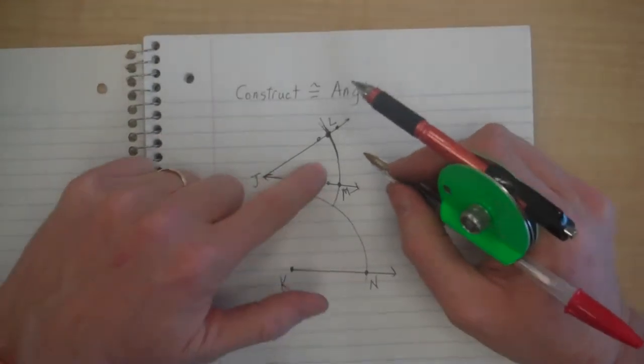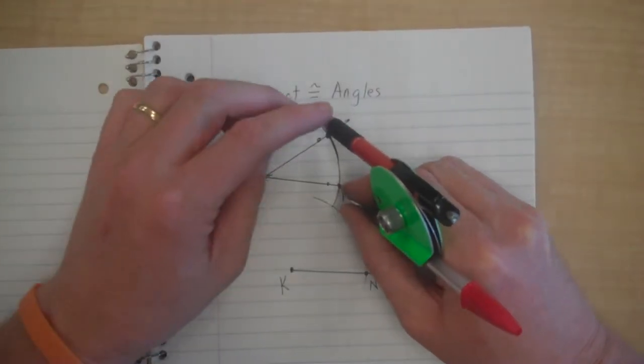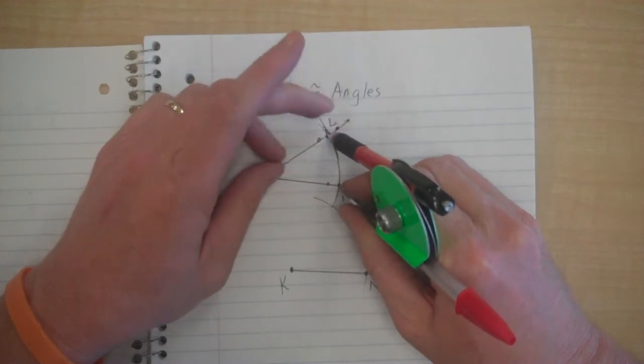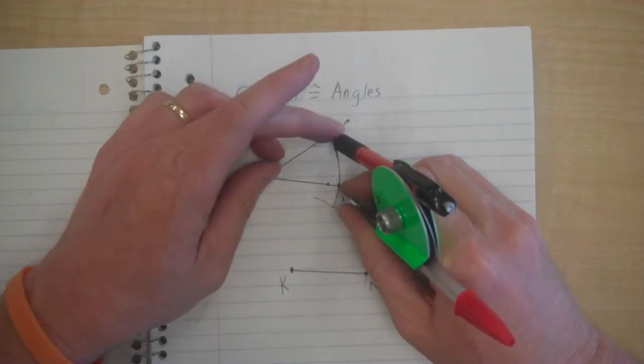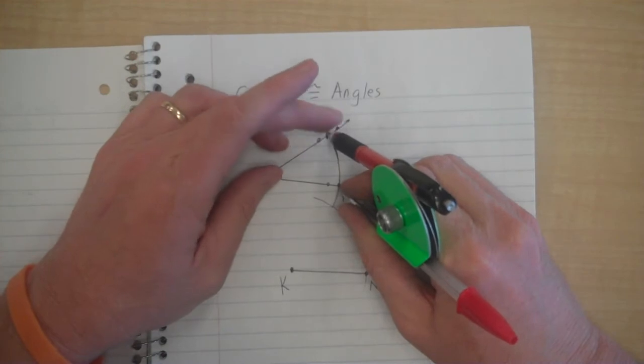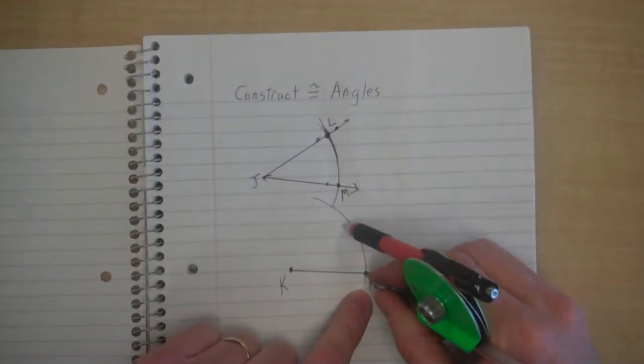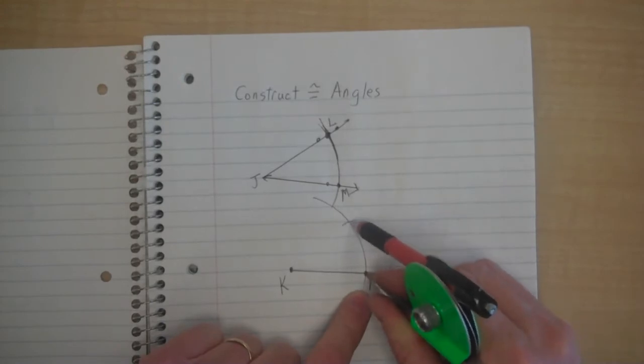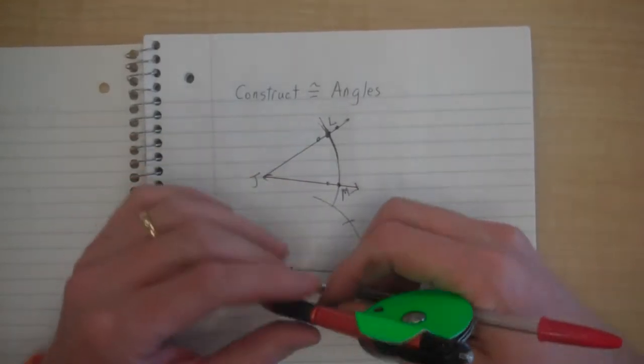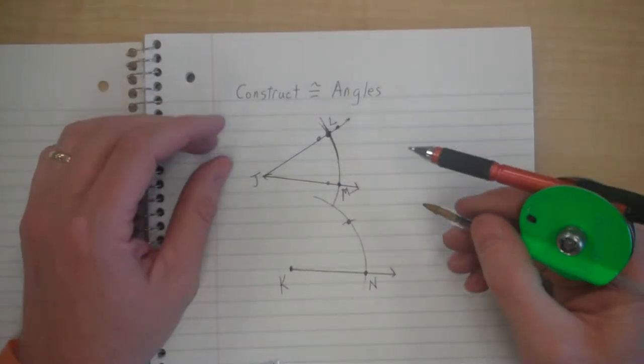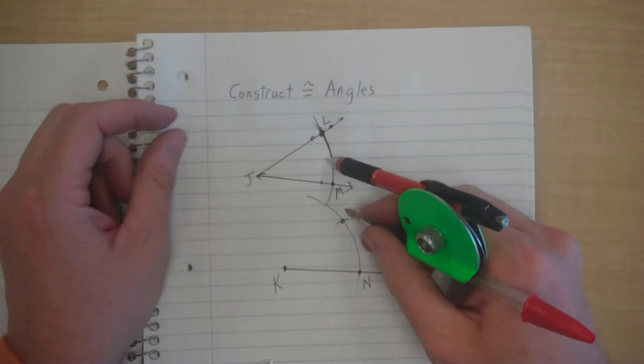Now I come back up to this angle. I set my pivot on M, my other point on L, and I'm going to put this pivot here on N and cross this arc right here, and I'm going to call this point O.